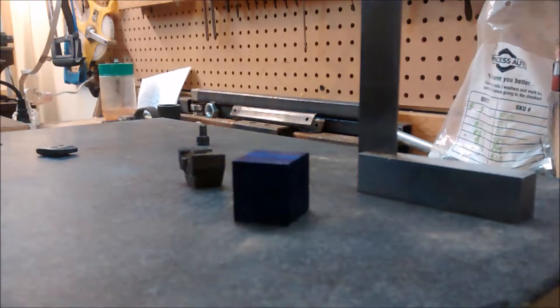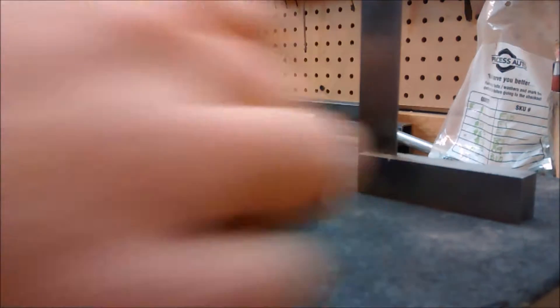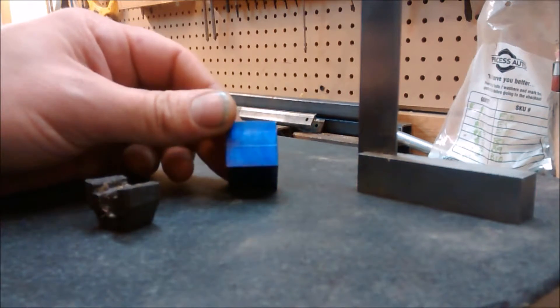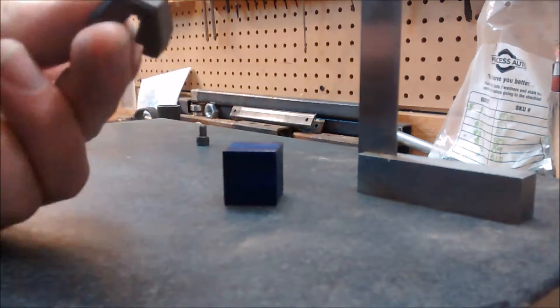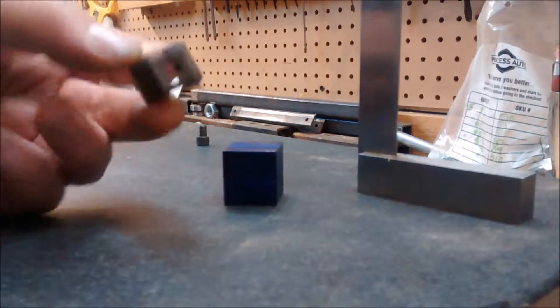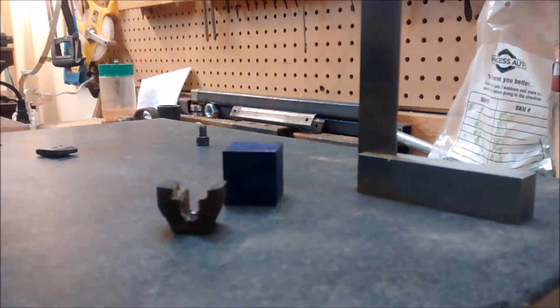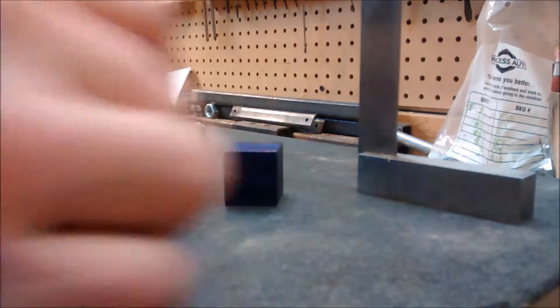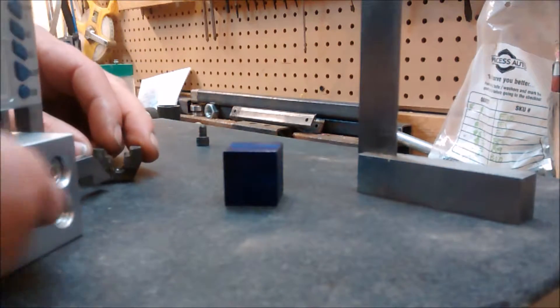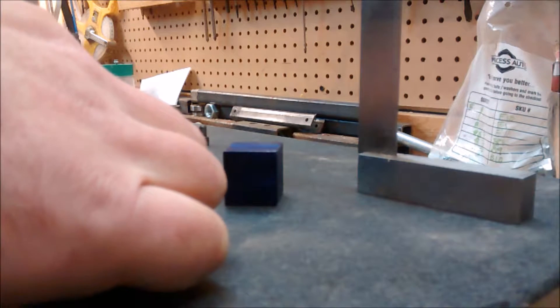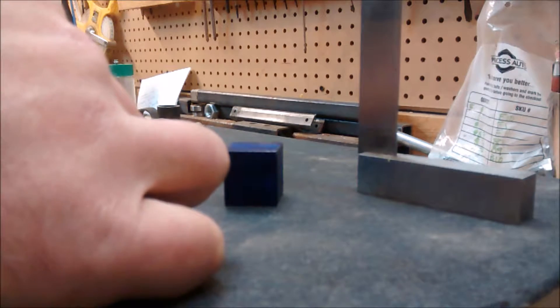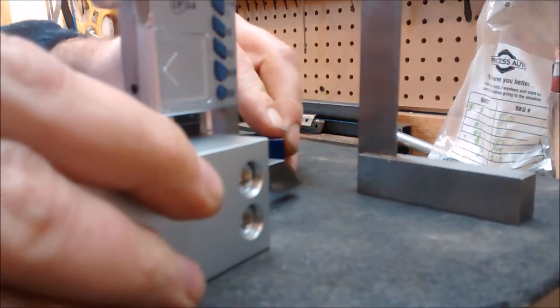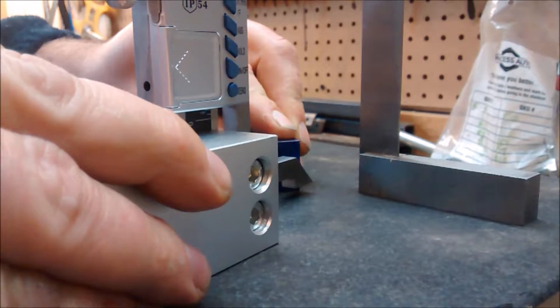You can see here we've got the block squared up and we've painted on some layout fluid and it's dried. Now I took the cap screw out of the bottom. We've got our height gauge and I'm just going to use this for transferring over the measurements. So we'll just work through this and transfer lines.